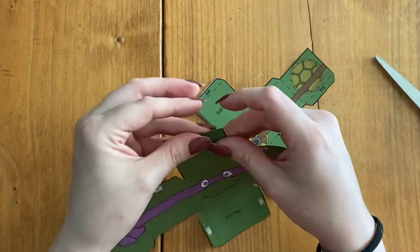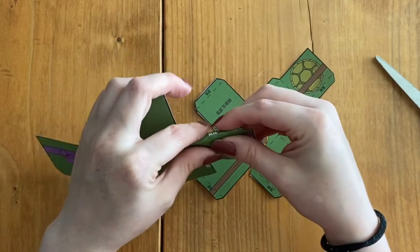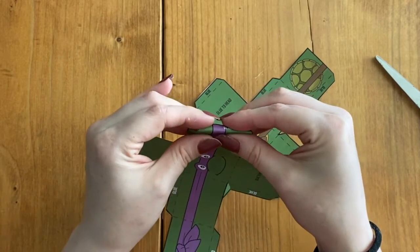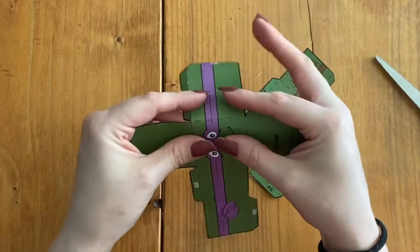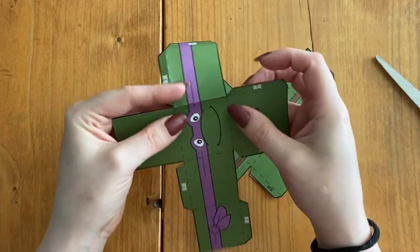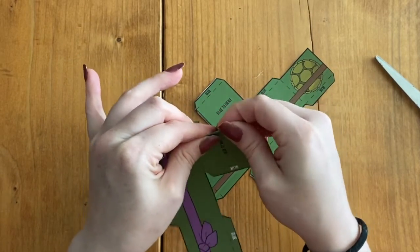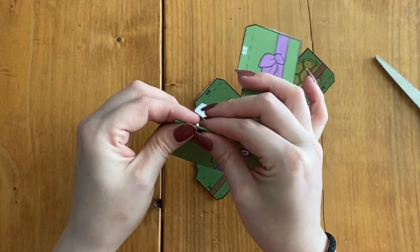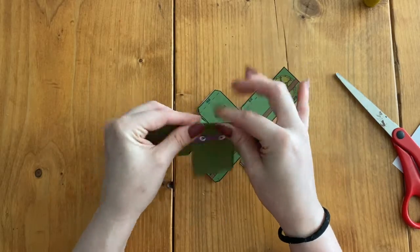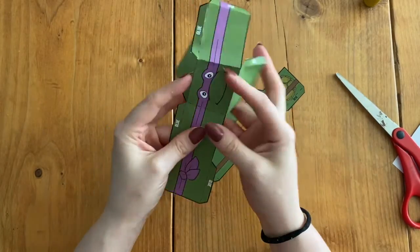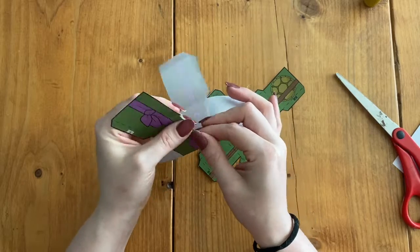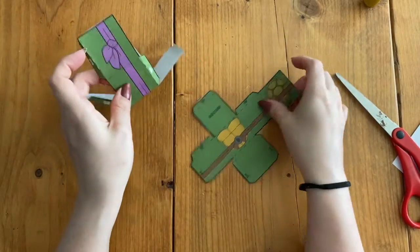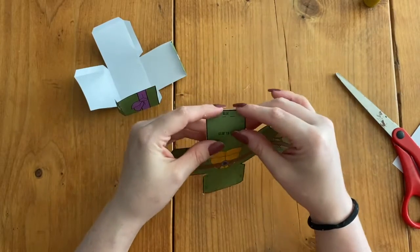So here I'm doing the same, pinching it, and you're going to go just everywhere that there's a dash line. So it's lots of folding. And then I'm going to do the same thing on the tiny one.